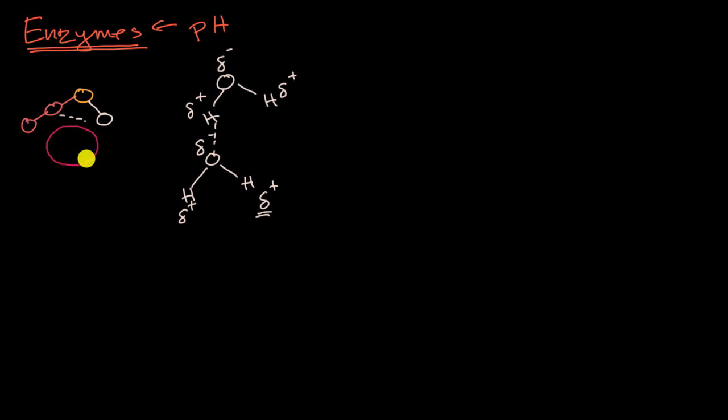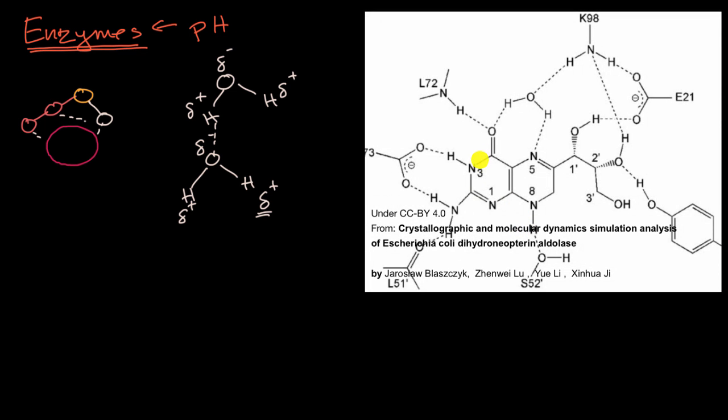So for example, if that's the substrate, and I'm just doing it as a big red circle, parts of it might form hydrogen bonds with the enzyme itself. And if you want to see a more complex picture of that...